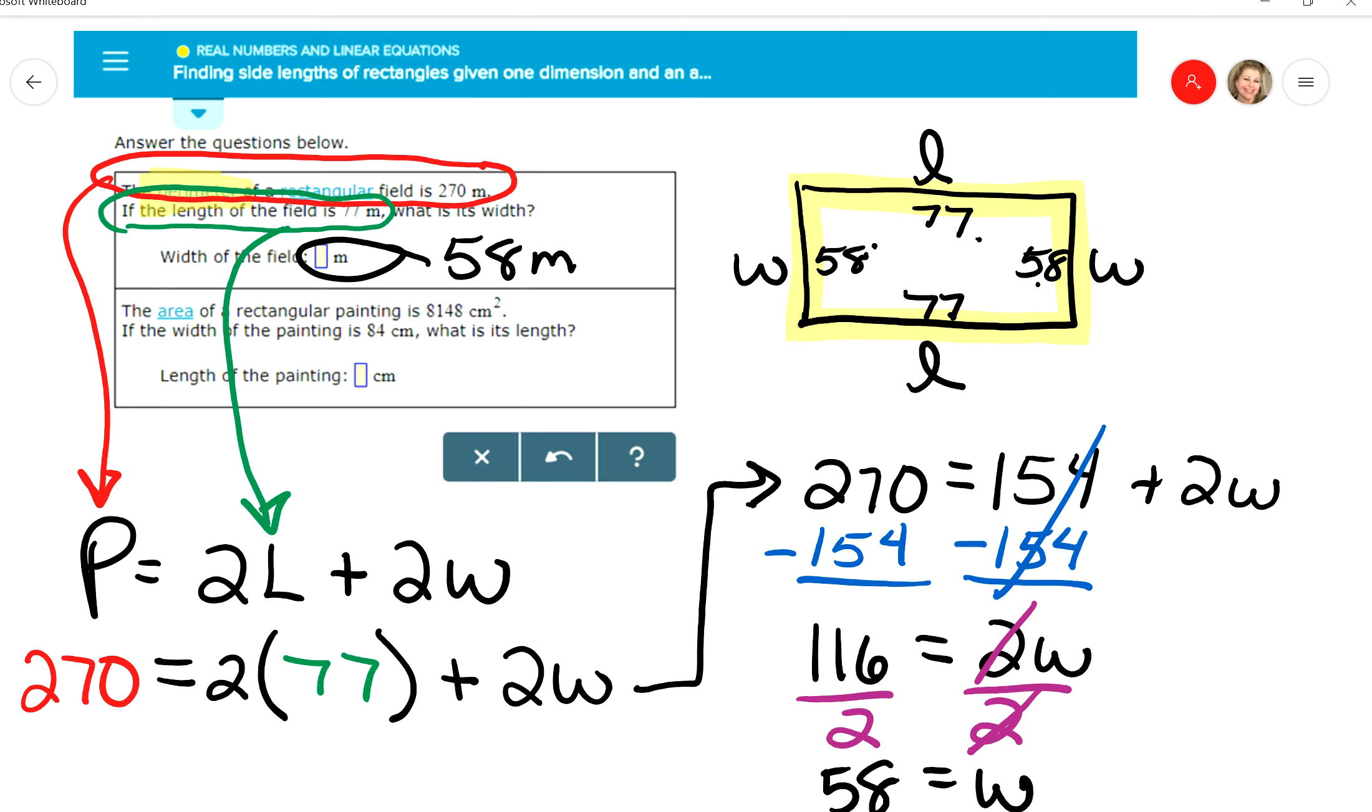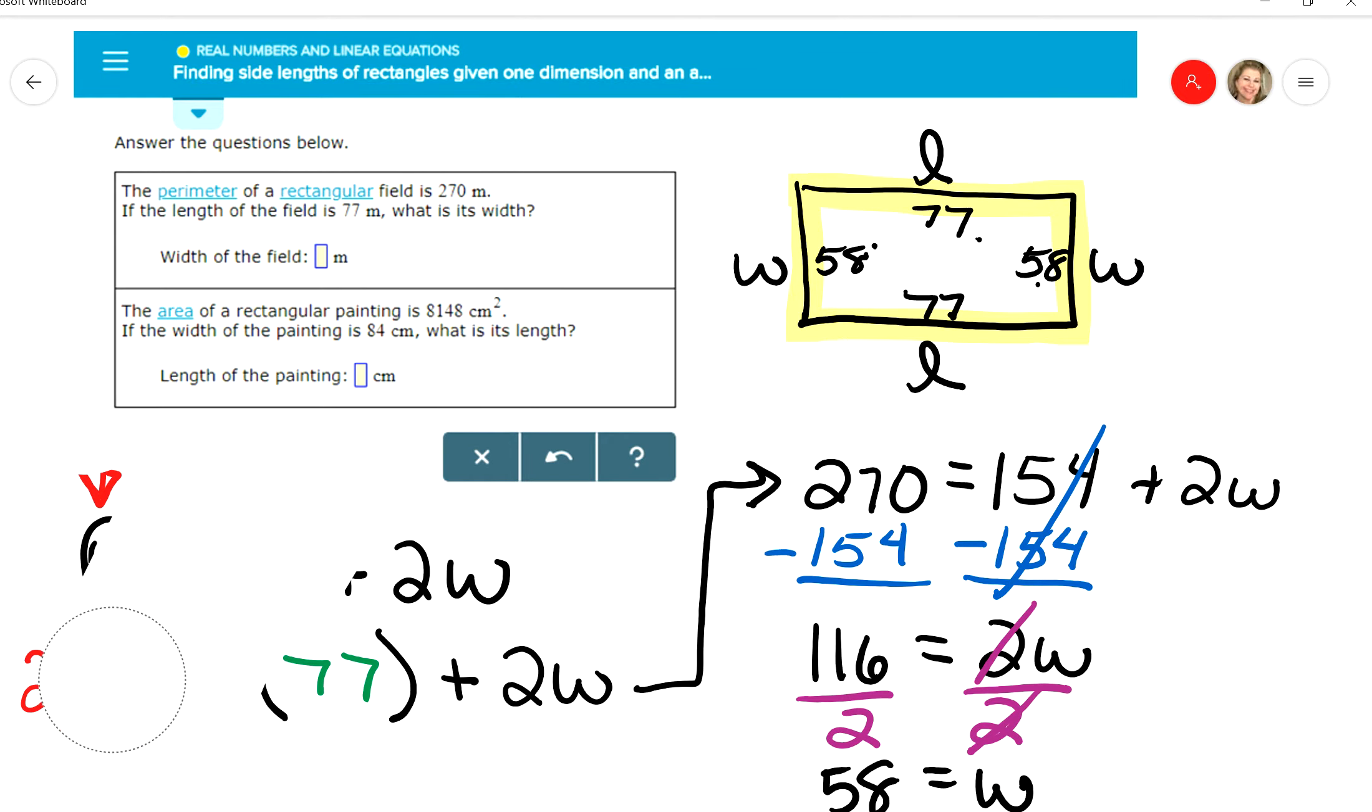Now that's the first part. The second part says the area of the rectangle. Well, to find the area of a rectangle, you're going to take the length times the width. That's the formula.